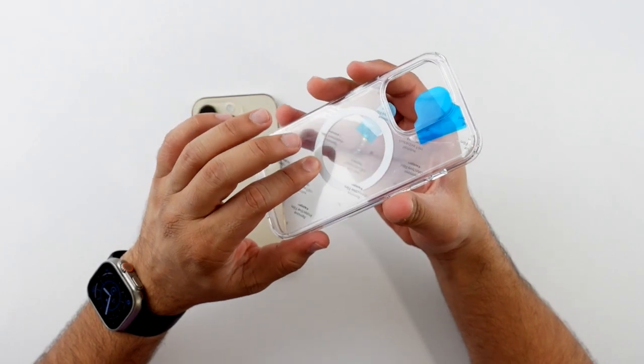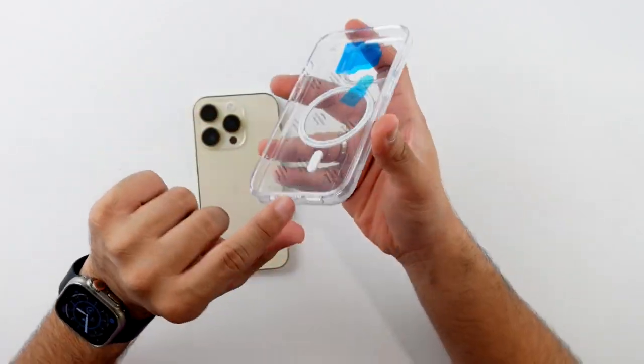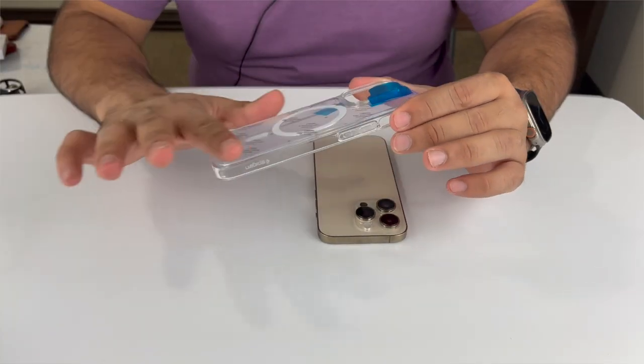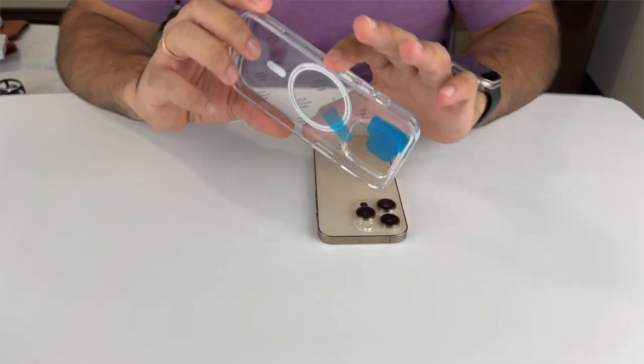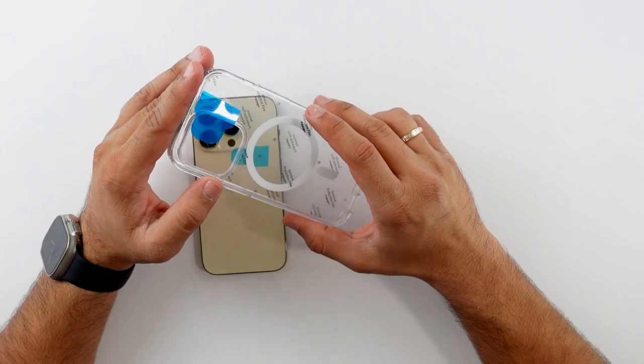The back is actually not the same material as the sides, so the sides are what will look slightly yellow over time whereas the back will not. I've used a lot of these ultra hybrid cases over the years and the back does not get yellow. The sides do a little bit, but if you've got a gold phone, guess what? You won't notice anyways.